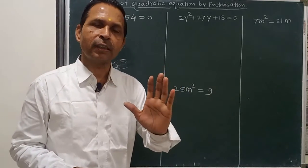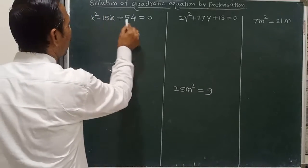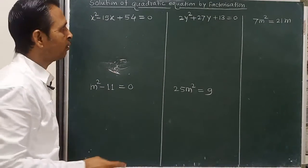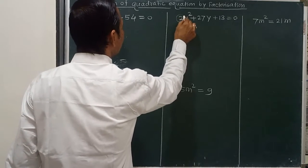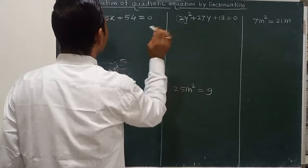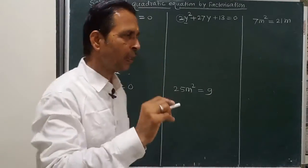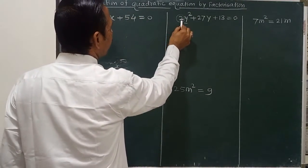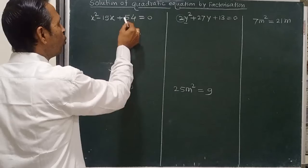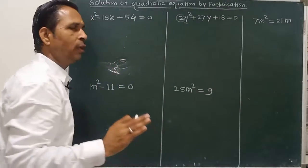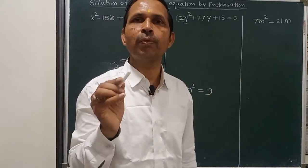We have to follow some sign conventions. We have to compare some of these terms. The coefficient of x squared is 1 here, while the coefficient of y squared is 2 in the second example. To find the solution of this type of quadratic equation, the process is to multiply the constant term with the coefficient of the square term.